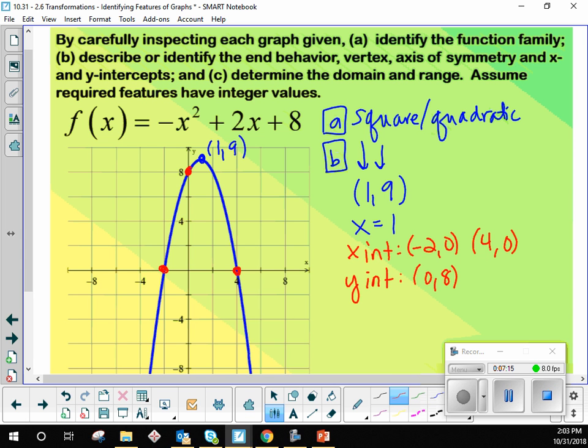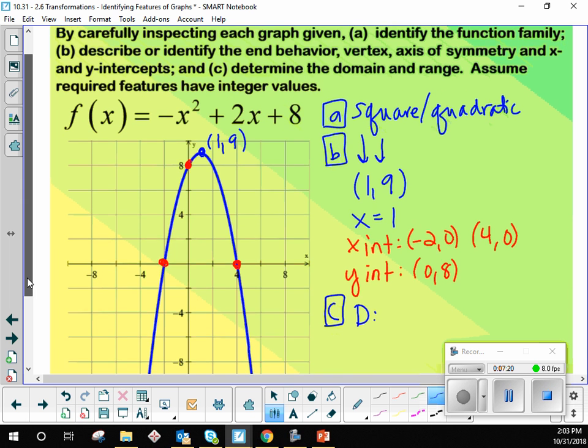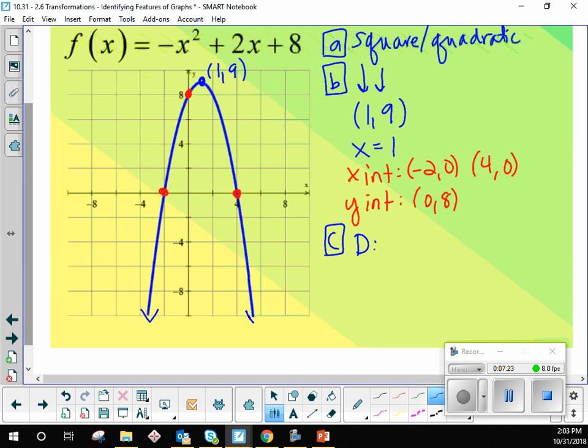And then the last thing for C is the domain and range. What's the domain here, assuming these are arrows? Negative infinity to positive. And the range is the bottom boundary to the top boundary. What's the bottom boundary and the top boundary? Nine. With a bracket or a parenthesis on nine? Bracket. Because it's a solid dot up there. It's an included value. So this is basically your entire homework.